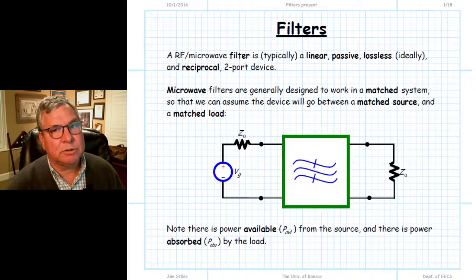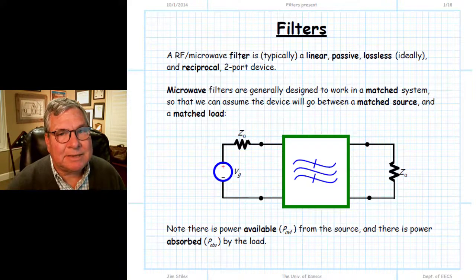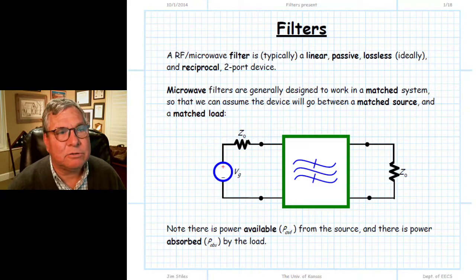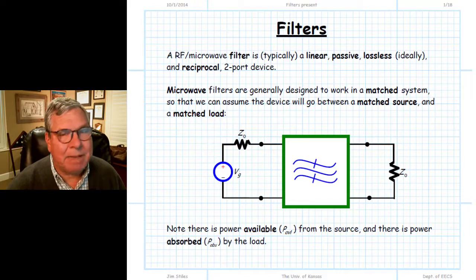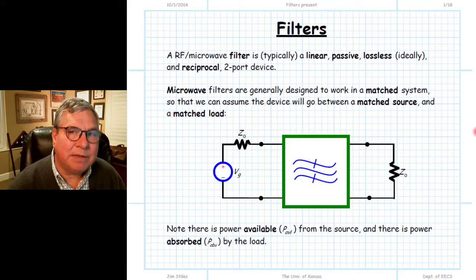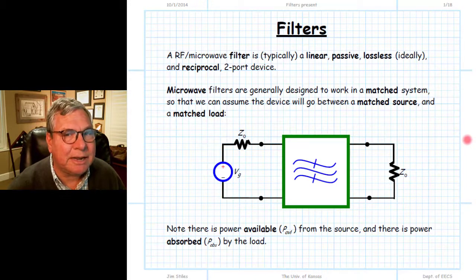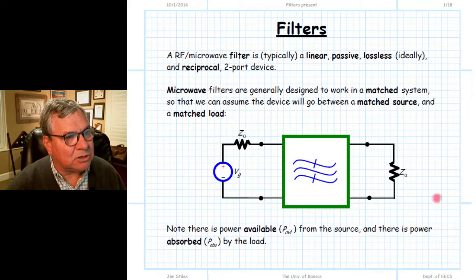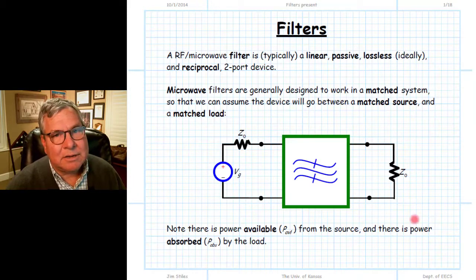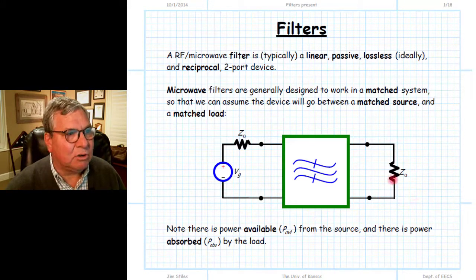Let's look at microwave filters. What makes a microwave filter different from a normal filter you may have learned about in earlier electrical engineering courses is that a microwave filter is designed to be immersed in a matched system. It is designed to be connected to other matched devices — devices whose port impedances are equal to the characteristic impedance Z0 of the transmission line connecting them, generally 50 ohms. At the output of a filter we have a matched load.